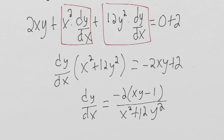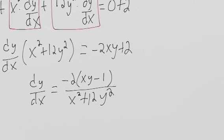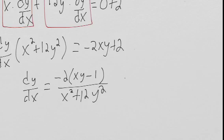Alright, so now it wants us to find the slope of the tangent line. We have our derivative, we need to plug in. What's our point? -1 for x and 1 for y. So we have -2 times (-1) times (1) minus 1.